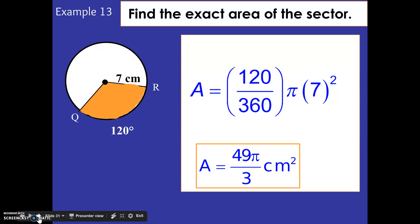And here's an example of finding the exact area of the sector. Again, leaving the pi in there. You can see our area equals 120 divided by 360 times pi times 7 squared. So I multiply all that. Again, leaving my pi right in my answer there. 49 times pi divided by 3. All right.